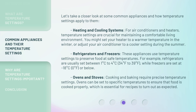Refrigerators and freezers: these appliances use temperature settings to preserve food at safe temperatures. For example, refrigerators are usually set between 1 degree Celsius to 4 degrees Celsius (34 degrees Fahrenheit to 39 degrees Fahrenheit), while freezers are set at minus 18 degrees Celsius (0 degrees Fahrenheit) or below.